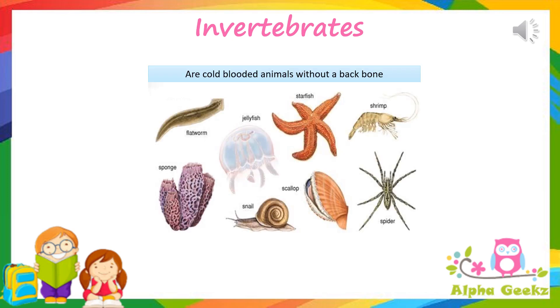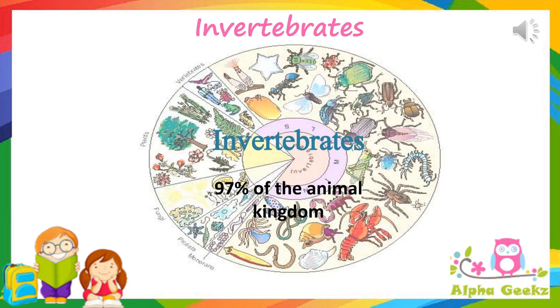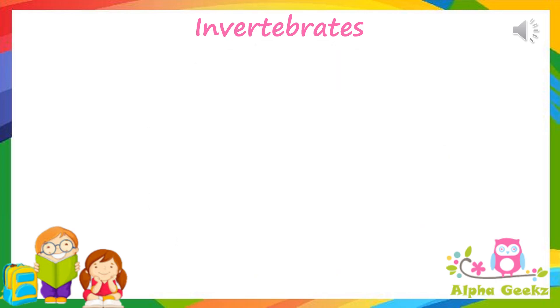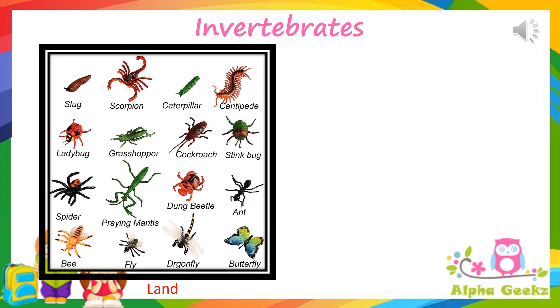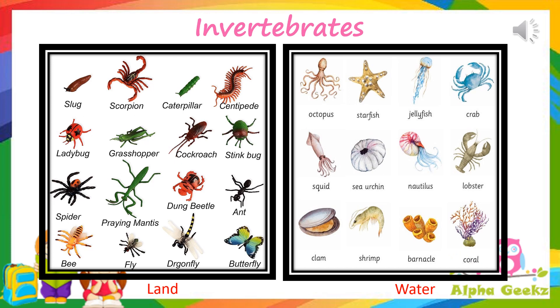Invertebrates are cold-blooded animals with no backbone. Invertebrates account for 97 percent of all animal species. Invertebrates can live on land or in water.